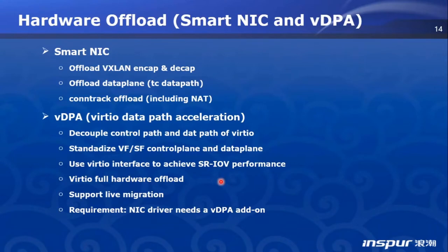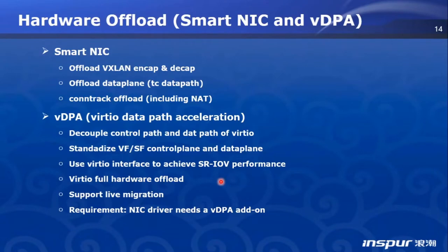That means a VM can use VF or SF to accelerate virtual networking, but the VM is still using the standard VirtIO-NET driver for all VFs and SFs, regardless of whether they are Mellanox, Broadcom, or any other vendor. Importantly, we can live-migrate such VMs — meaning we can have SR-IOV performance while using VirtIO and still do live migration. That is why VDPA matters. The prerequisite is that your SmartNIC must support VDPA and there must be a VDPA driver for it. So far, only Mellanox, Alibaba, and Intel VDPA drivers are available in the latest Linux kernel tree.